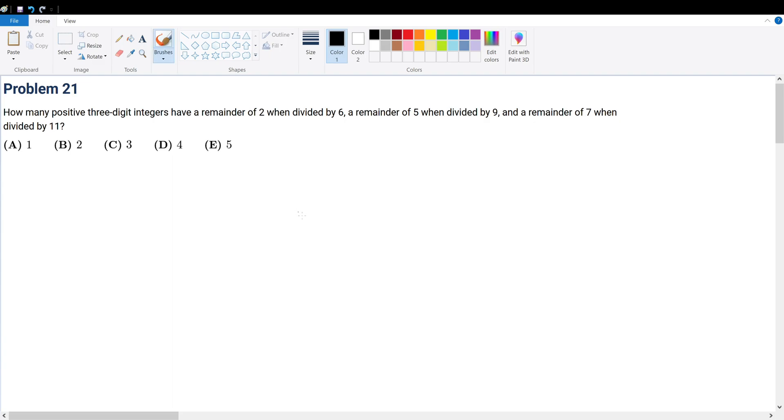Problem 21. How many positive 3-digit integers have a remainder of 2 when divided by 6, a remainder of 5 when divided by 9, and a remainder of 7 when divided by 11?